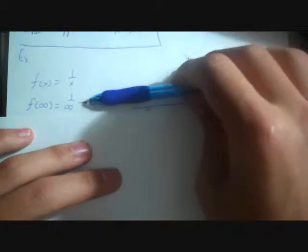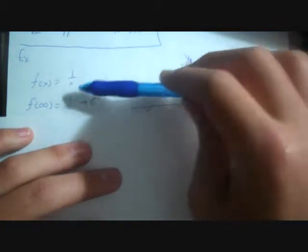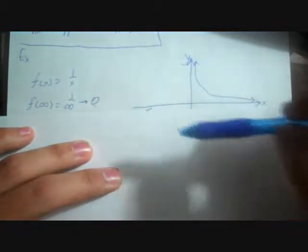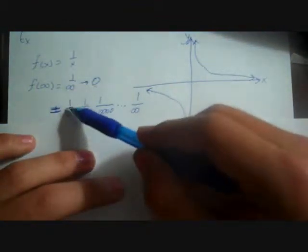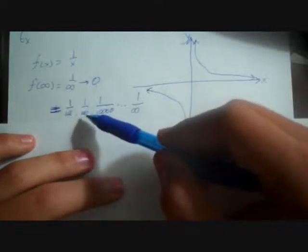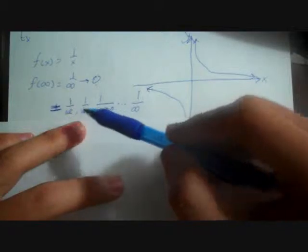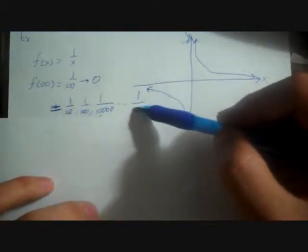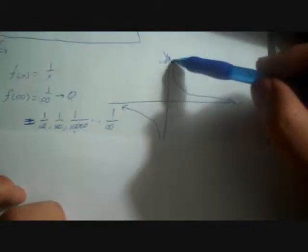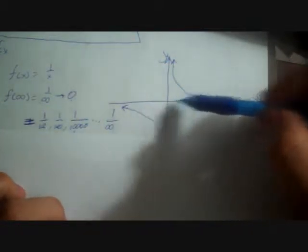So we know at infinity our function approaches 0. As x gets bigger — say x = 10 gives 1/10, x = 100 gives 1/100 — a smaller and smaller number. As x gets bigger and bigger, our y gets smaller and smaller, approaching this horizontal asymptote of y = 0 only at x equals infinity.